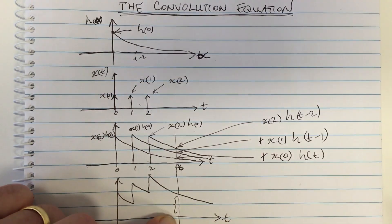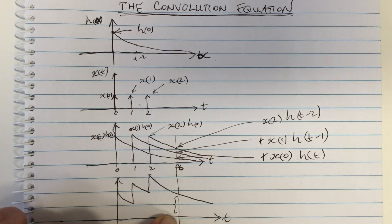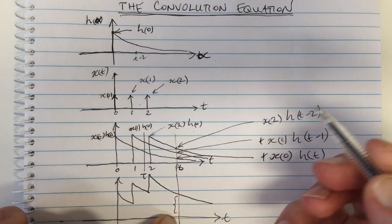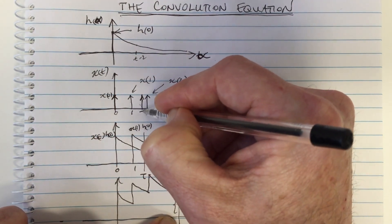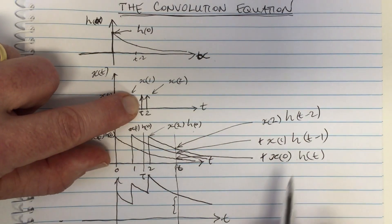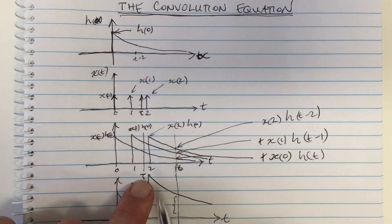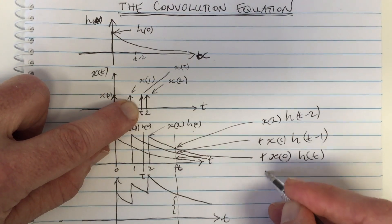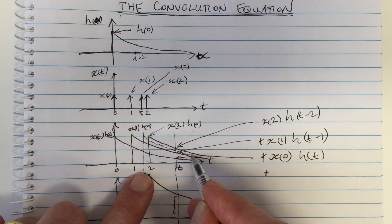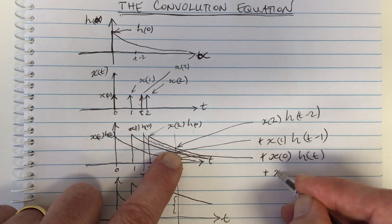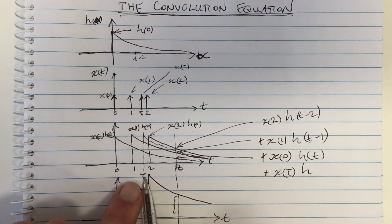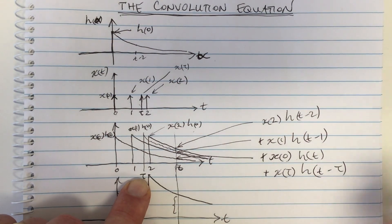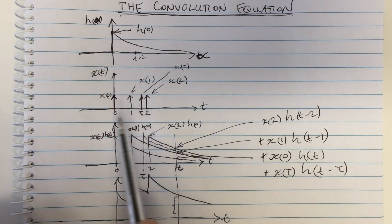This is where we start to see the convolution equation emerging. Let's pick a generic time tau and suppose there's another delta function at that generic time tau — not at 0, 1, or 2, but at any generic time tau. If there's another delta function here, its height is x(tau). This adds another decaying function to the output, with height x(tau) times h(t minus tau), because the amount it has decayed is over the time delay t minus tau.